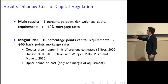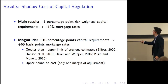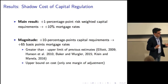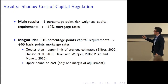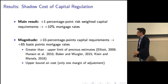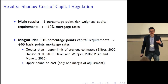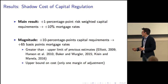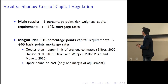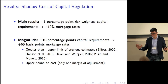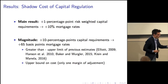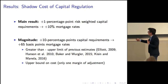To preview the results: I find a new estimate of the shadow cost of capital requirements. A one percentage point increase in the risk-weighted capital requirement increases mortgage rates in equilibrium by about 10 basis points. Comparing with the previous literature, which focuses on increases in capital requirements — not risk-weighted — I simulate a 10 percentage point increase in capital requirements and find an increase of about 65 basis points in mortgage rates. This is on the upper limit of previous estimates using very different techniques, and I see it as an upper bound because in my model the lender makes only one simple marginal adjustment: repricing the mortgage and passing the cost to borrowers.